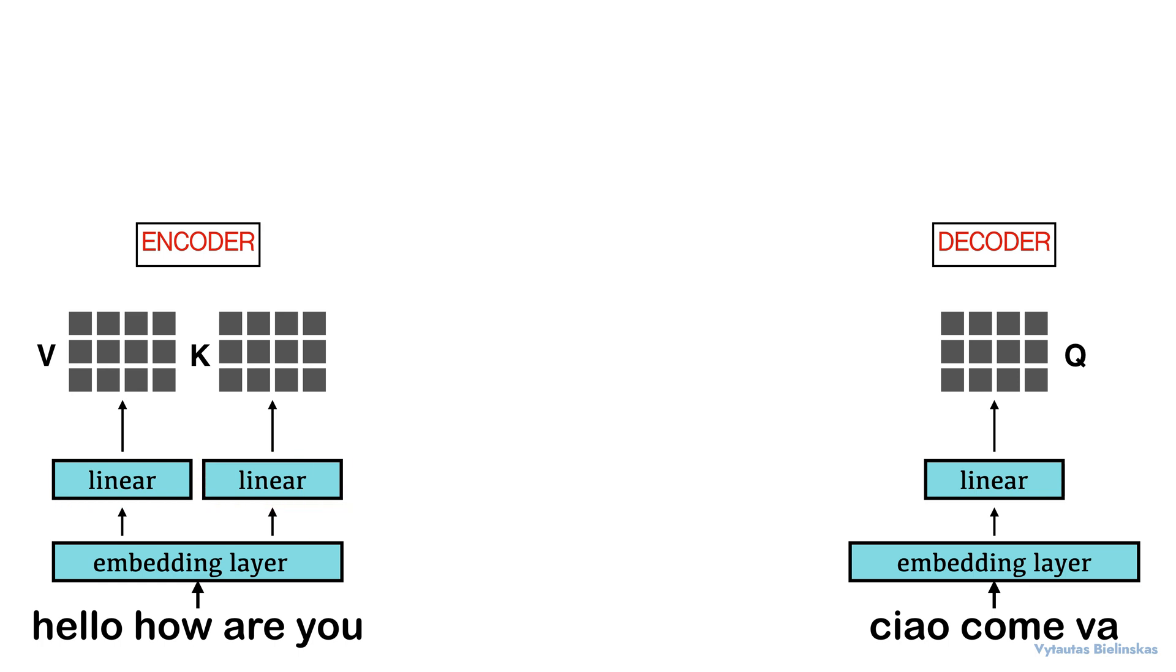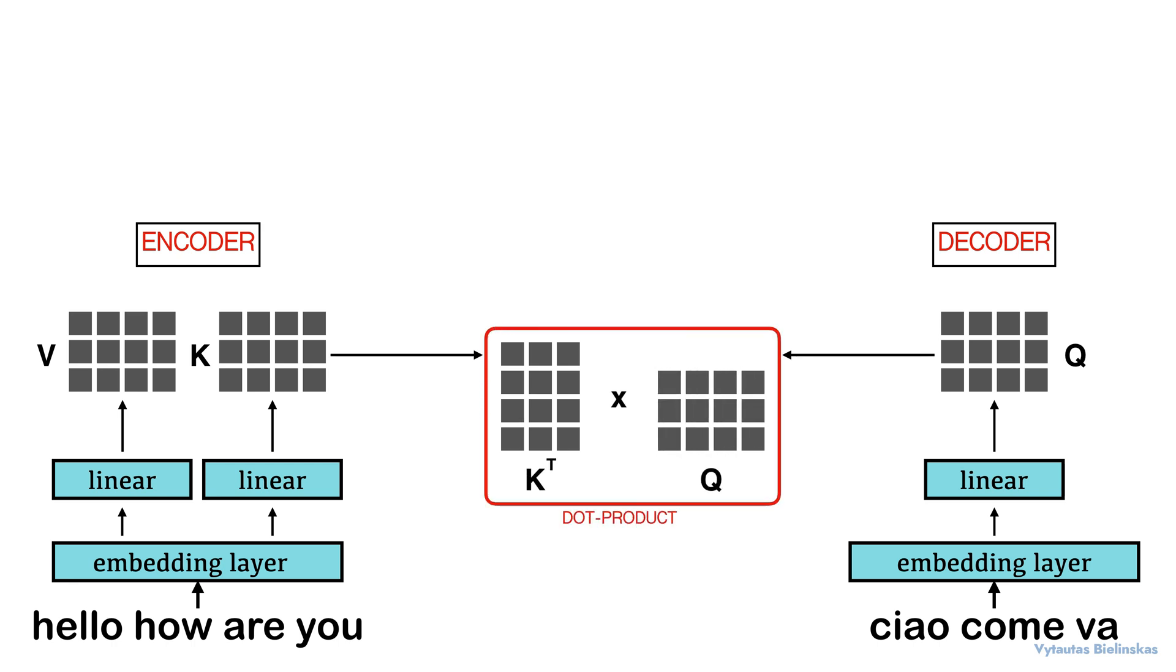And also we have the linear layer of the query. All in all, these produce our query, key and value tensors. And the next thing we have to do is calculate a dot product which is what you can see in the middle right here. So we are taking the key transposed and multiplying it by query and this produces this vector here. Keep attention to the dimensionality here.